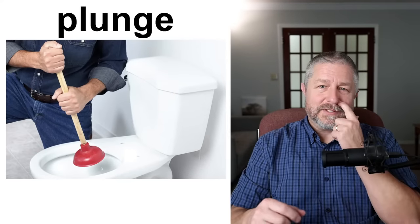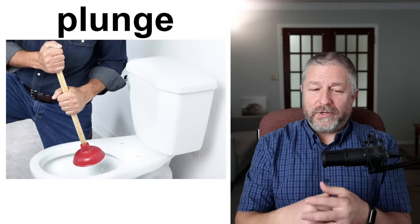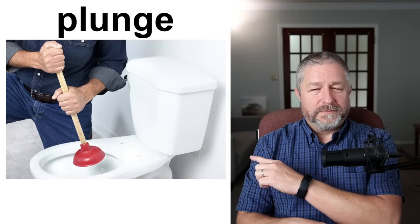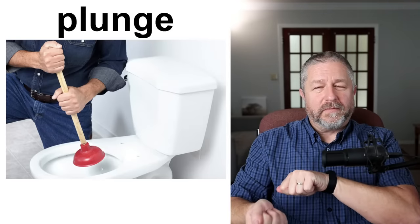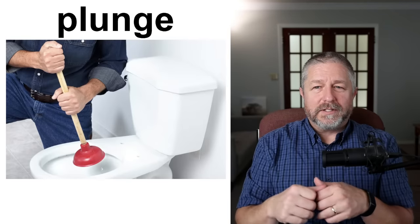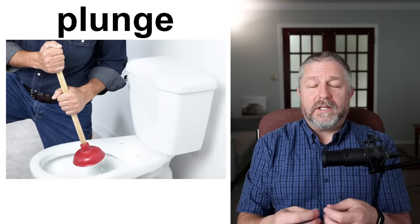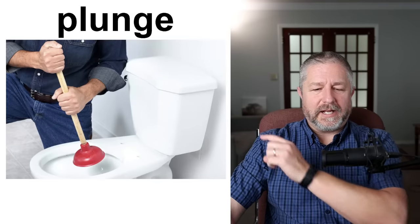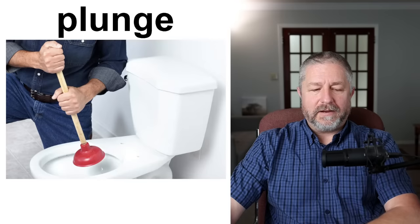Plunge. Sometimes the toilet won't flush — sometimes you need to unclog the toilet or plunge the toilet. This thing is called a plunger. You use it to force air through the bottom of the toilet, which will unclog it. Someone might say 'the toilet upstairs isn't flushing, we need to plunge the toilet.' Unclog or plunge — both words you can use — and that is a plunger.